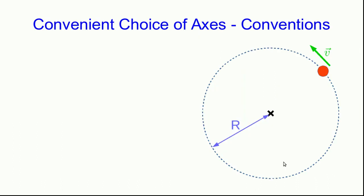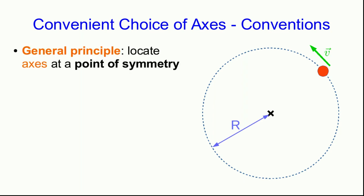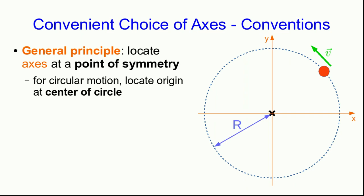Let's start by talking about some conventions and a convenient choice of axes. It's a good general principle that whenever possible, locating your axes at a point of symmetry of whatever you're trying to describe can make life easier. In particular, in the case of a circle, the obvious point of symmetry is the center of the circle.